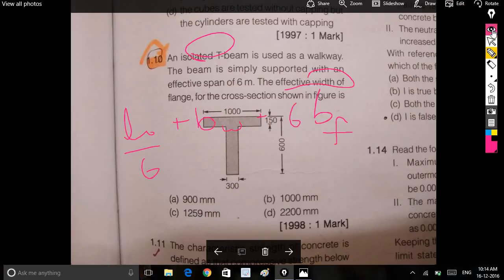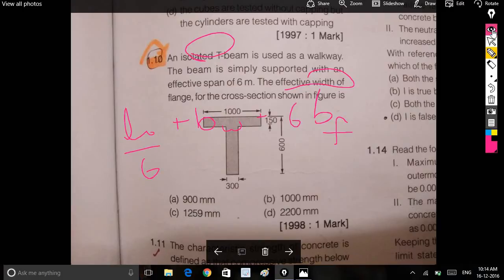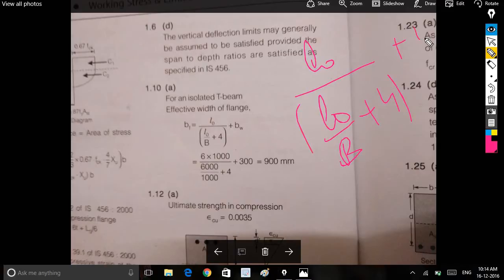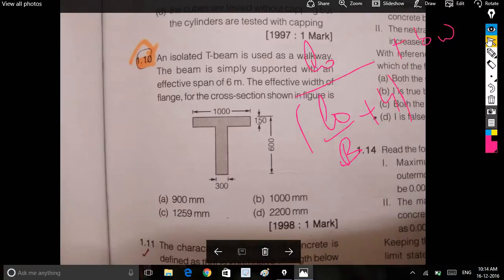This is a very important formula for effective width of flange. It is L0 by L0 divided by B plus 4 plus BW for isolated T-beam.